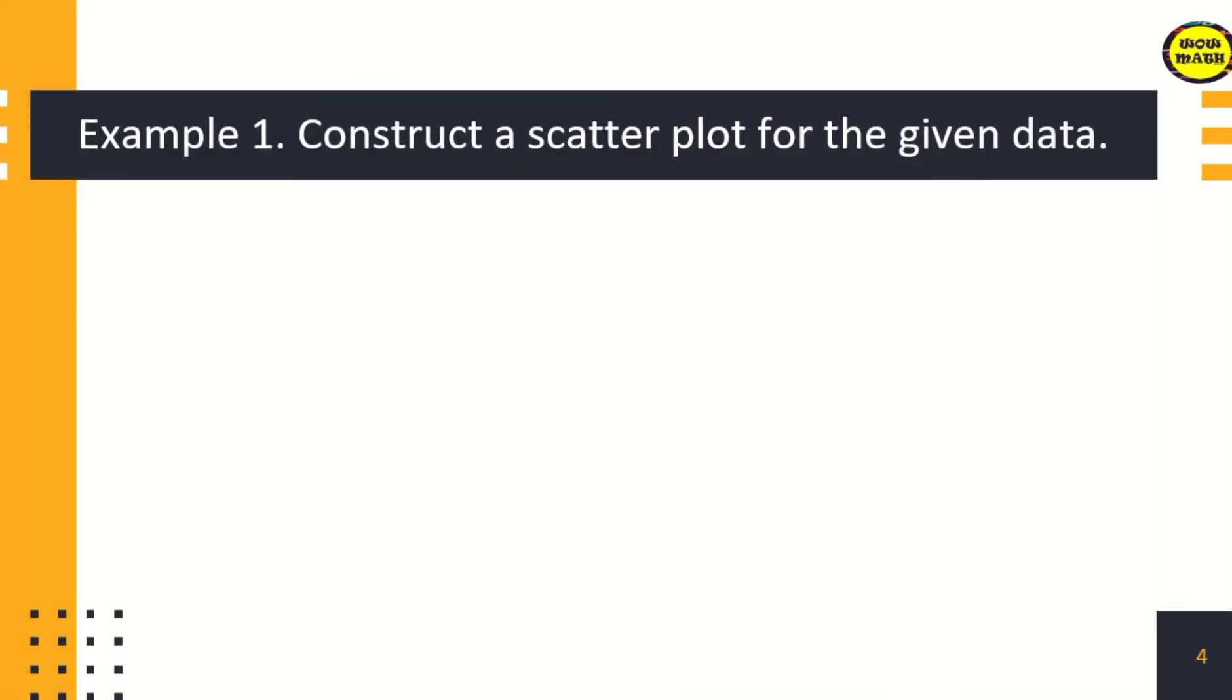In plotting the scatter diagram, you are going to plot graphically the values of the correlated variables, placing one variable on the x-axis and the other on the y-axis. You're going to recall your lesson during your grade 8. This scatter diagram gives you a picture of the relationship between variables.